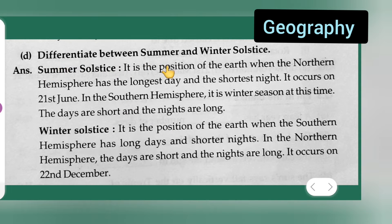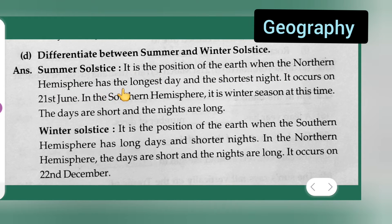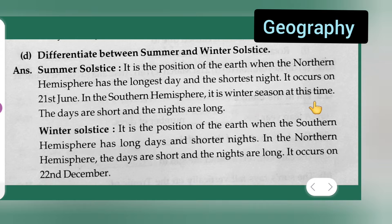Differentiate between summer and winter solstice. Summer solstice: it is the position of the earth when the northern hemisphere has the longest day and the shortest night. It occurs on 21st June. In the southern hemisphere, it is winter season at this time — the days are short and the nights are long.